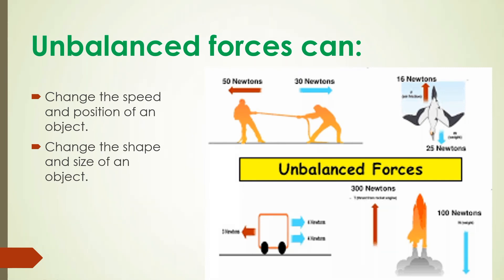We have many examples of unbalanced force. In a rope, if one side has 30 N and the other has 50 N, the movement will be toward the 50 N side because that force is greater. Another example is a rocket: if the upward force is 300 N and the downward force is 100 N, the net force is 200 N upward, so the rocket moves upward.